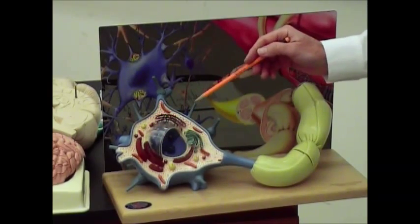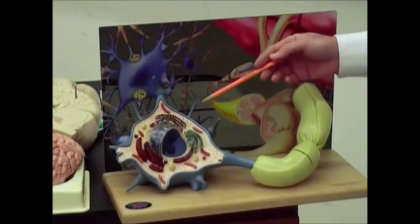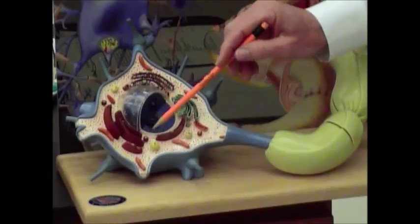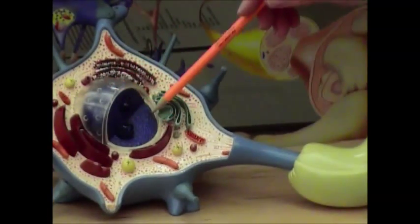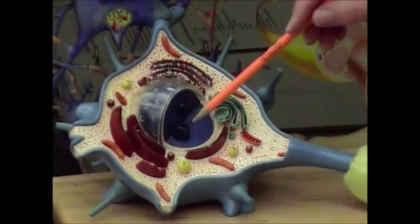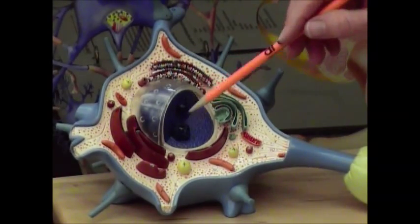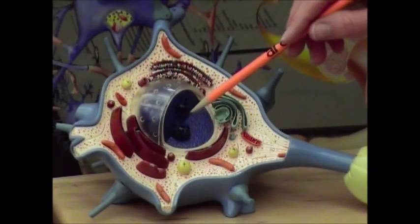Inside the cell body or soma or perikaryon, you've got a nucleus, and then you've also got the little dots inside of the nucleus that are called the nucleoli. Remember when you see these, that means you've got a lot of protein synthesis going on in the particular cell.